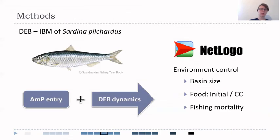Our model species was European pilchard, a common small pelagic fish fished across all of Europe. We used the existing AmPet entry and all the parameters available there. We combined it with the DEB individual dynamics and then input everything into the individually based model created in NetLogo. We allowed for environmental control, like changing the basin size, as well as the amount of food—initial food and carrying capacity—as well as changing the fishing mortality.